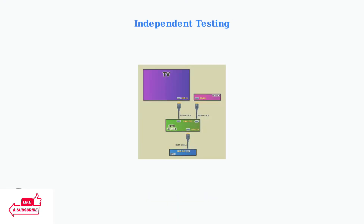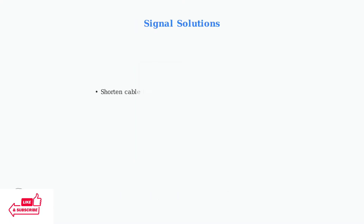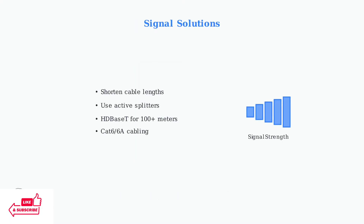Test each TV independently by connecting the source device directly to each display — this helps identify compatibility issues between specific devices. Combat signal degradation by shortening HDMI cable lengths or using active splitters with built-in signal amplifiers. For long distances over 100 meters, consider HDBaseT technology using CAT6 or CAT6A cabling.